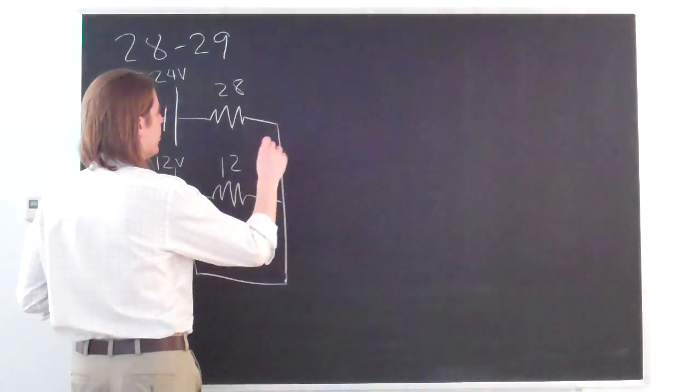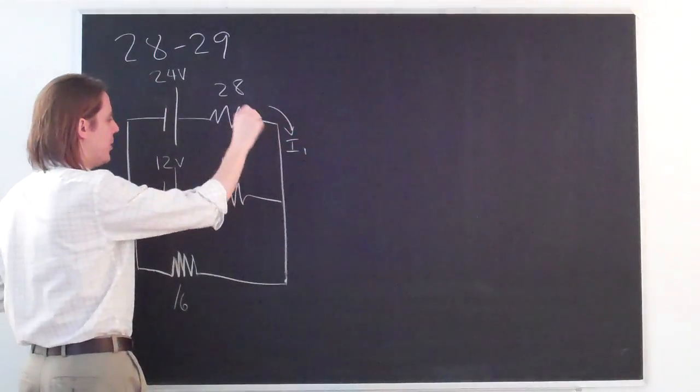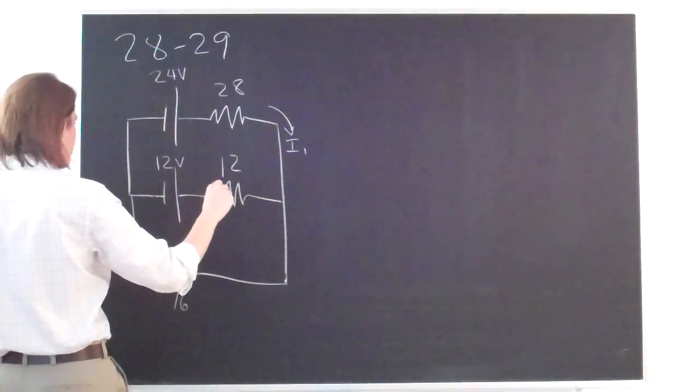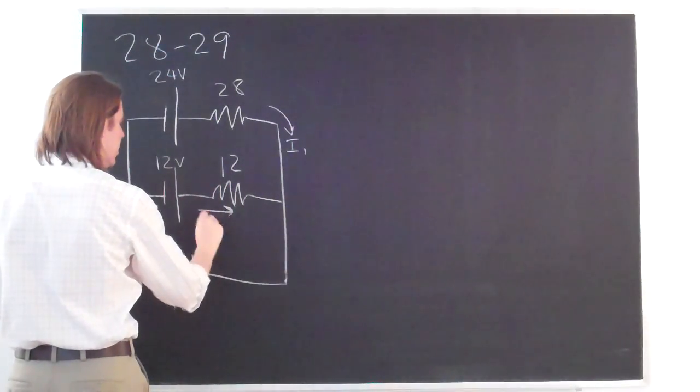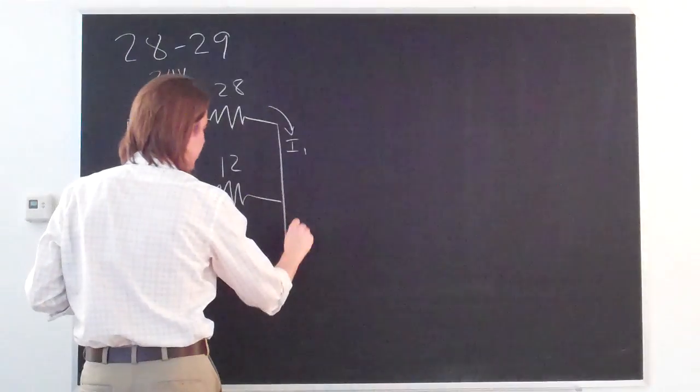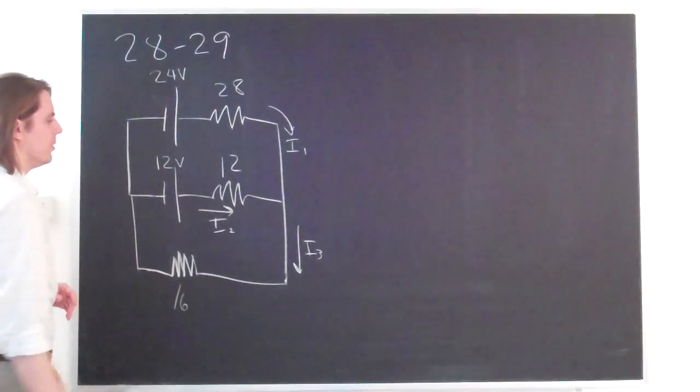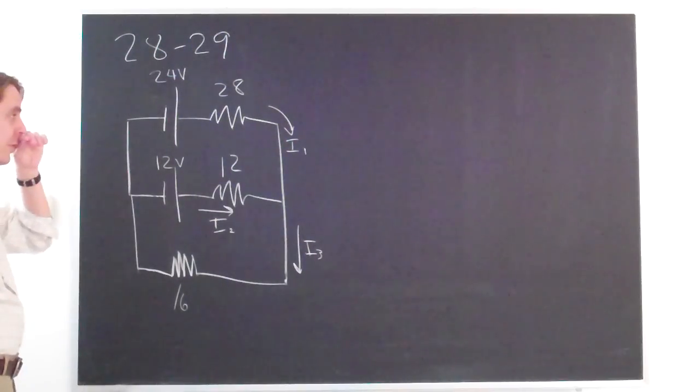Our three unknowns then are the currents. So we'll have some current flowing from that battery. We'll have some current flowing from this battery, I2. And then somehow those will probably come together and we'll have some current flowing through this part of the circuit here. So three currents to describe the entire circuit.